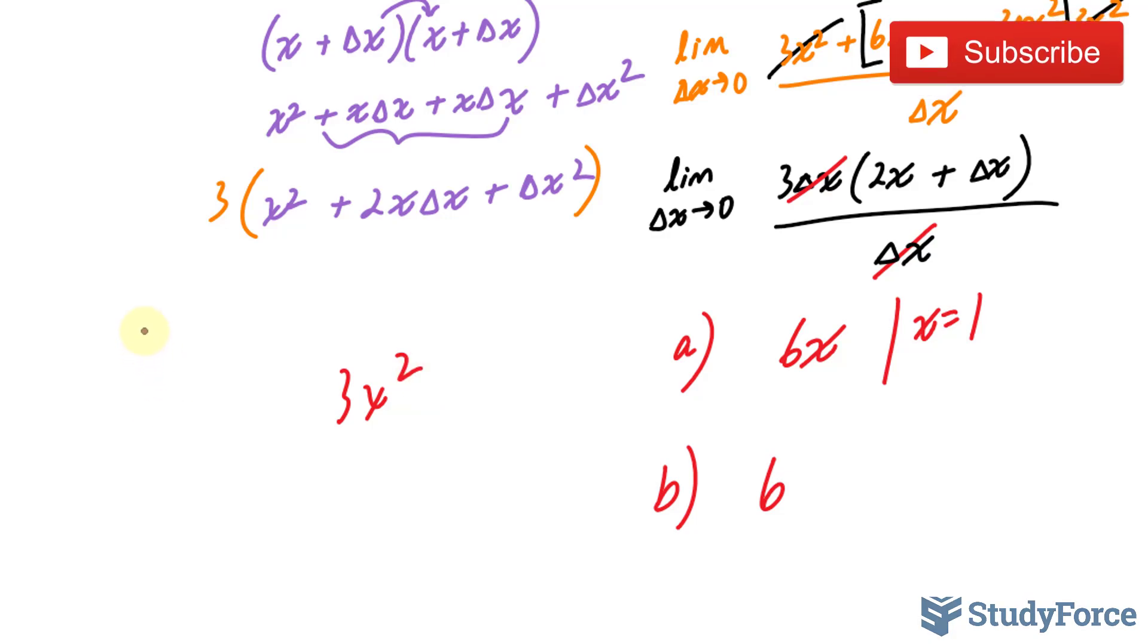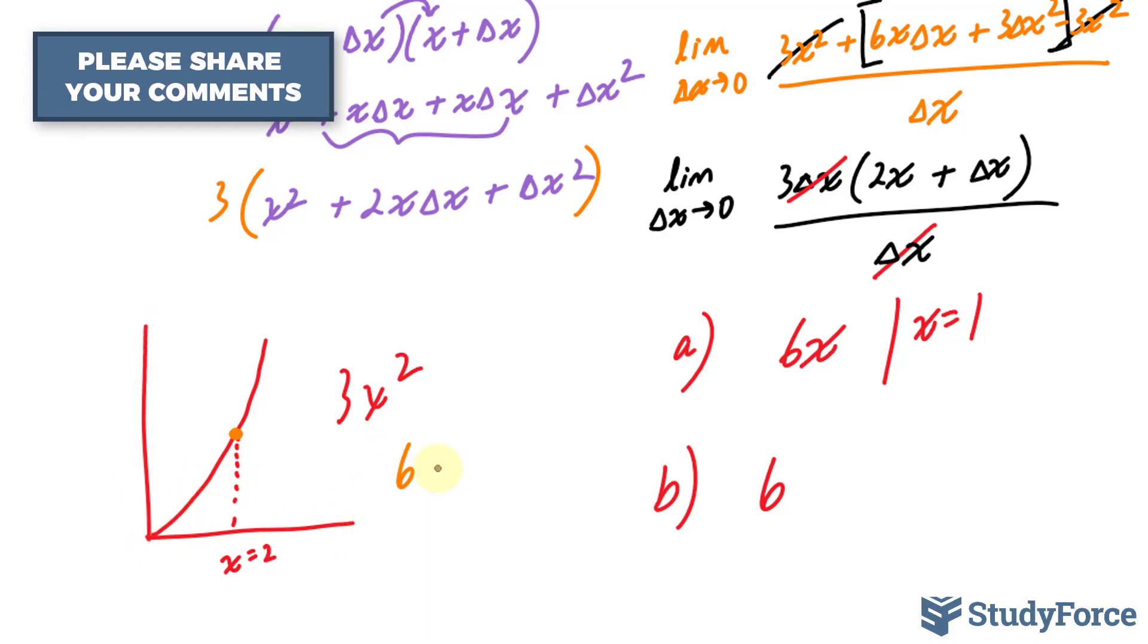Another way to look at this is that we have the function 3x squared in its parabola. It looks like this. It's a quadratic parabola facing upwards. Let's say this is x is equal to 1. And at this point, the rate of change is 6 units of y per every 1 unit of x.